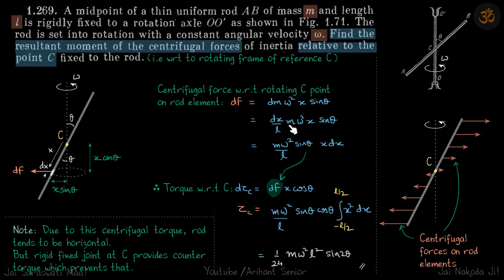Now, torque with respect to C: of this dF force about C point, the torque will be—this angle will be theta as well—so dF cos theta into x, or dF into x cos theta. So dF into this height, which is x cos theta. And now we'll put the value of dF here, so we get a relation between torque and x.